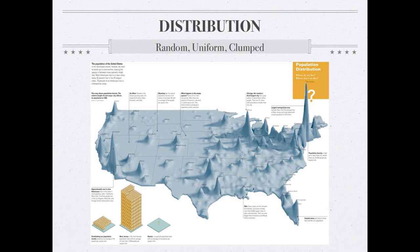The next characteristic is distribution. There are three basic population distribution patterns: random distribution, uniform distribution, and clumped distribution.